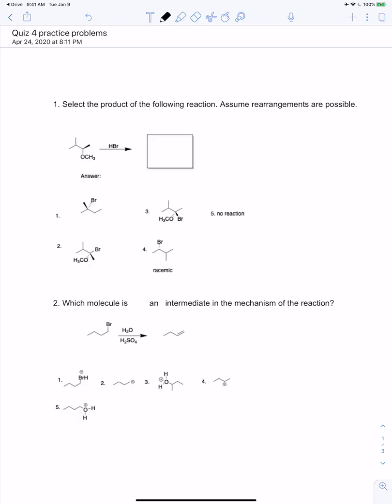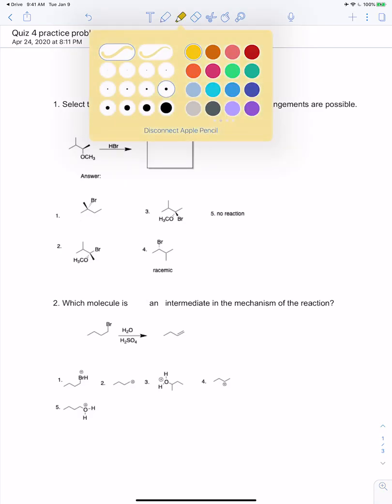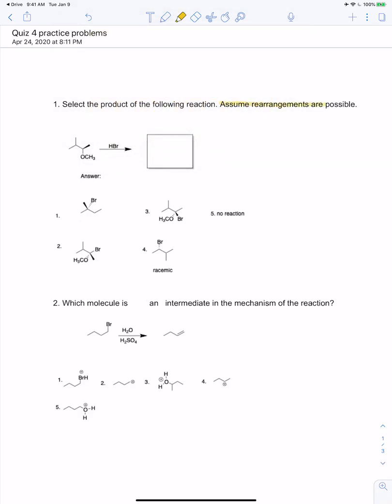All right, let's take a look at these quiz problems. So the first one's pretty straightforward. This is just asking you to select the product of the following reaction, but assume rearrangements are possible.